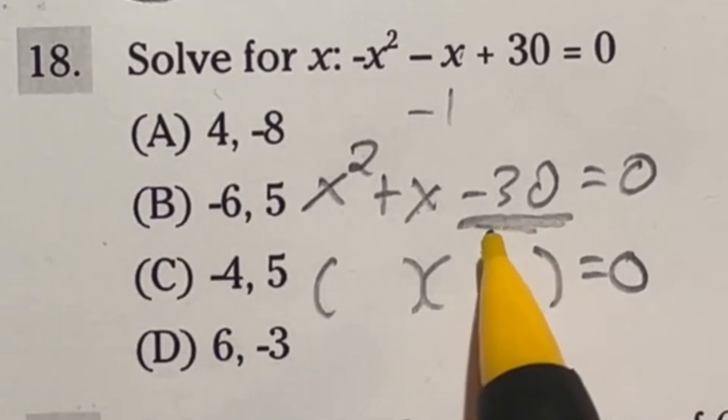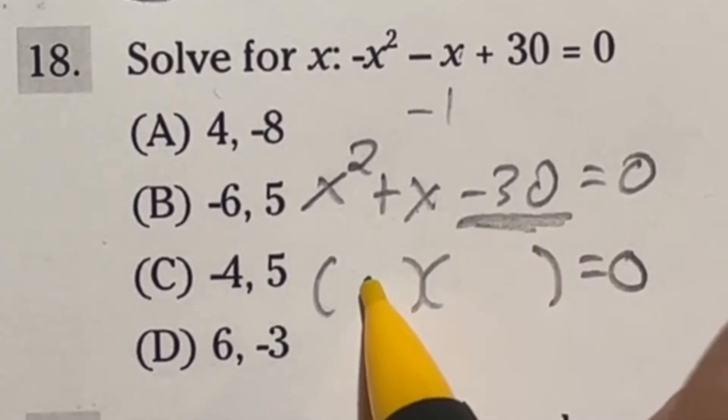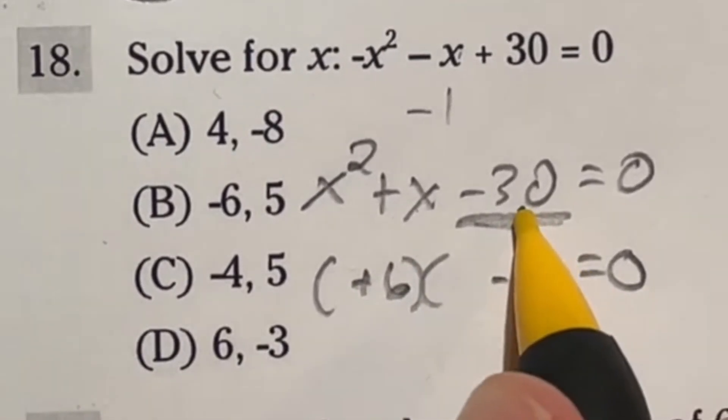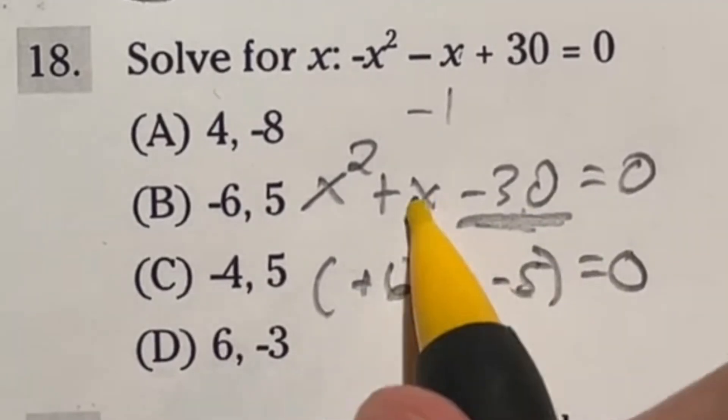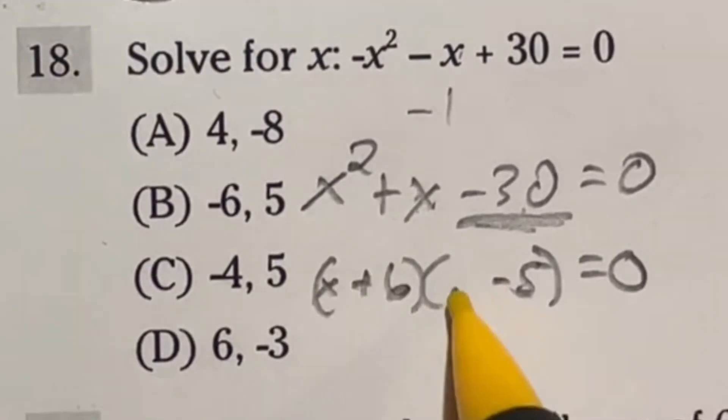Well, that would be a positive six times a negative five. That gives us the negative 30. Add them together, gives you a positive one. Then since we don't have a leading coefficient anymore, we can just put an x for both of here.